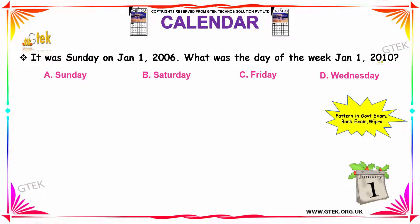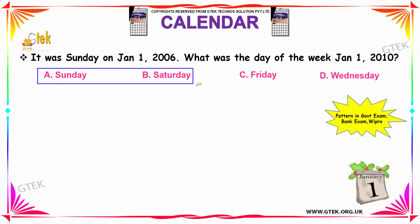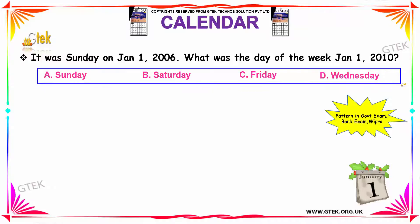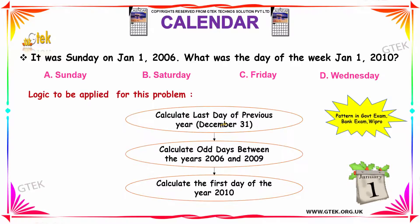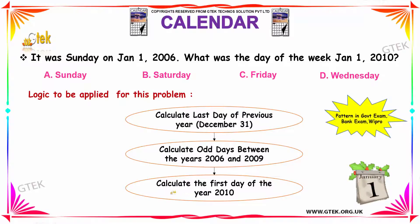We have to find the day of the week on Jan 1st 2010. The options are Sunday, Saturday, Friday, and Wednesday. These patterns of questions appear in government, bank, and pro exams. The logic is: first calculate the last day of the previous year, given Jan 1st 2006 is Sunday, so the previous year would be Saturday. Then calculate the number of odd days between 2006 and 2009, and finally find the first day of 2010.